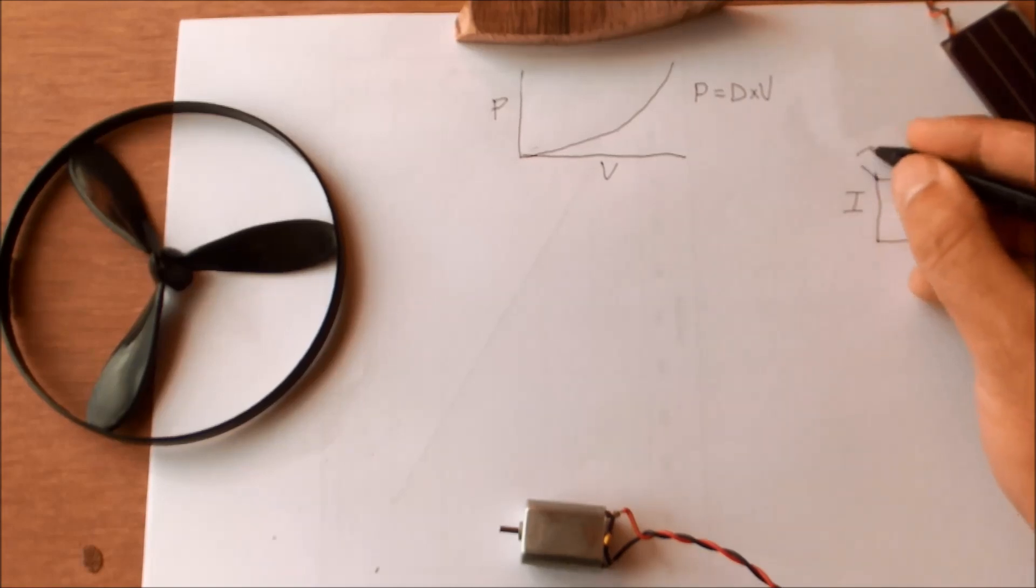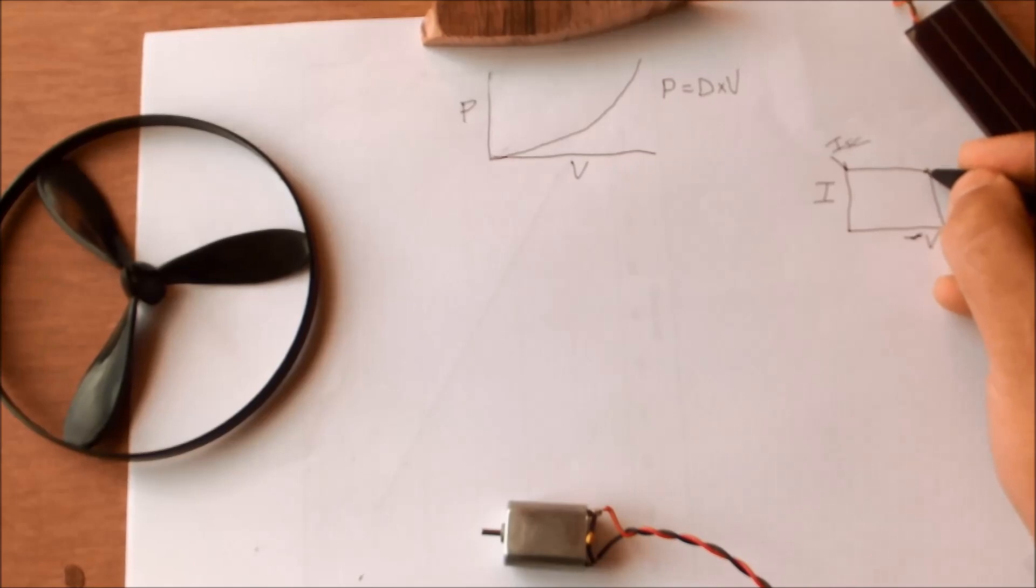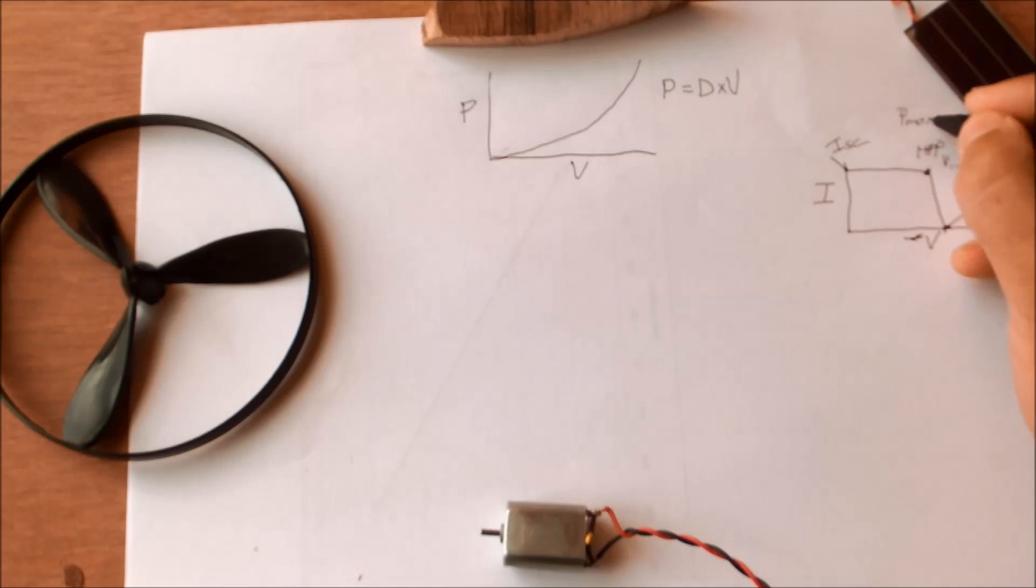They tell you what the short circuit current is and they would also give you the maximum power point values for voltage and current. That should correspond to the actual rated power for that solar panel.